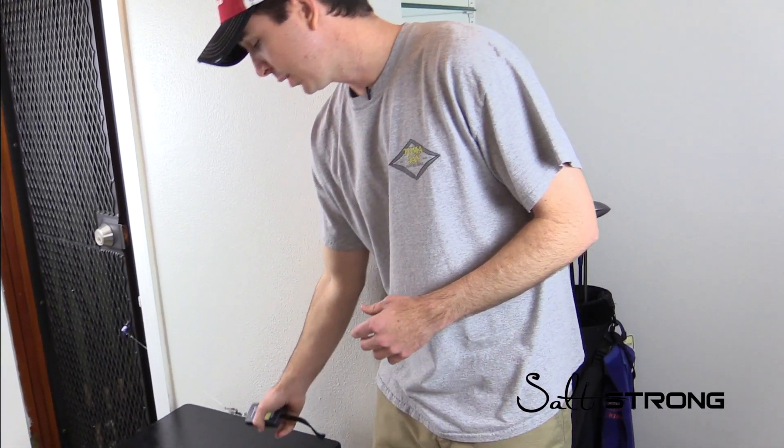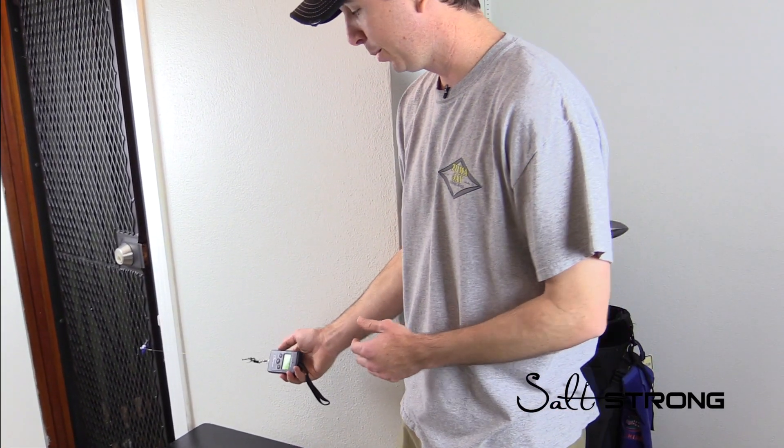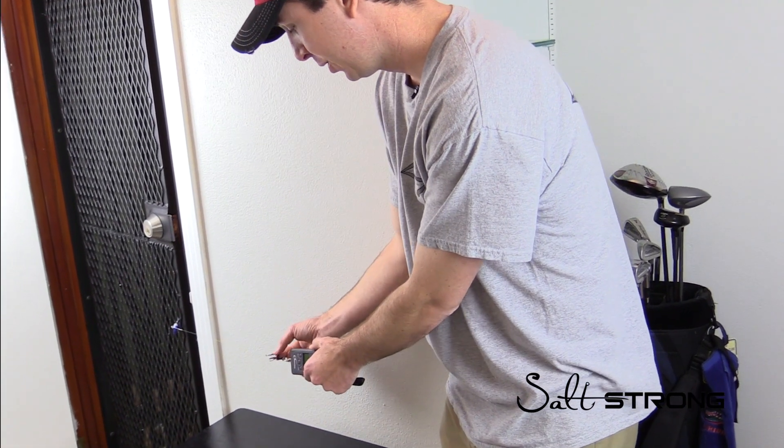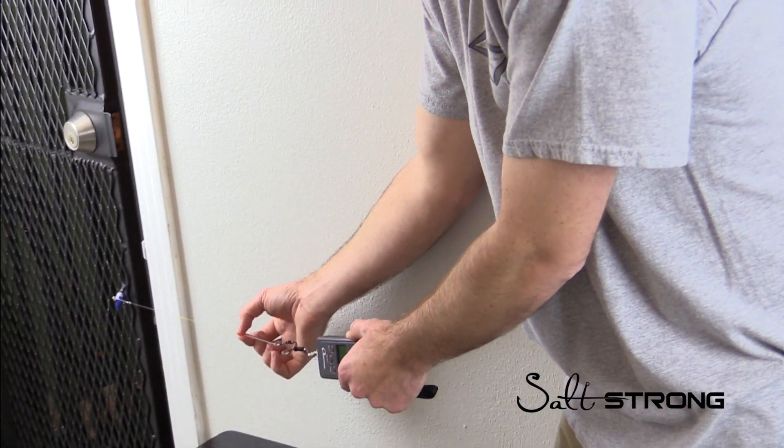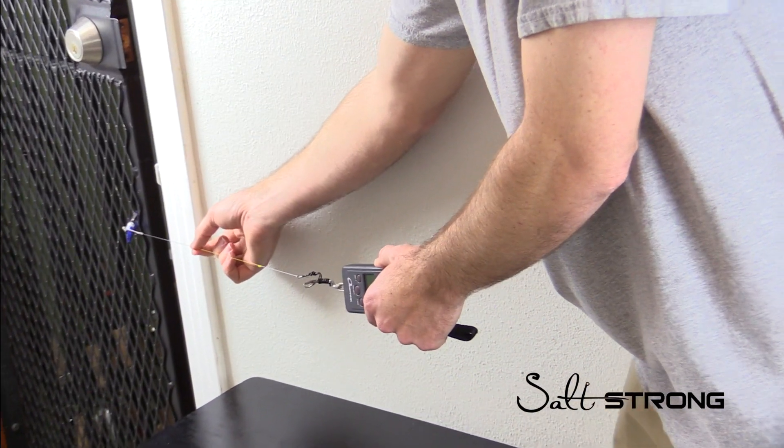So we're going to do the final test. I've tied it against the FG knot, and this is actually how I've been testing these. It's pretty simple - I tie a hook to the leader to the knot, and then I do the exact same thing on the other side.